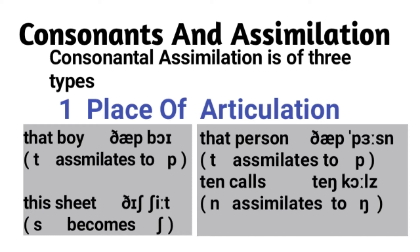The next example is 'ten calls.' It will become 'teng calls.' What happens here is N assimilates to NG. When talking about place of articulation, both NG and K are velar sounds, so they share the same place of articulation.